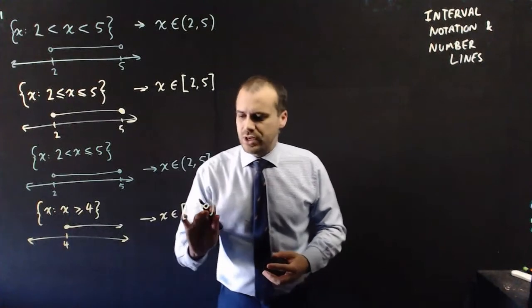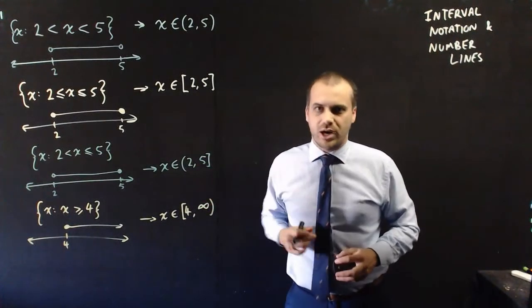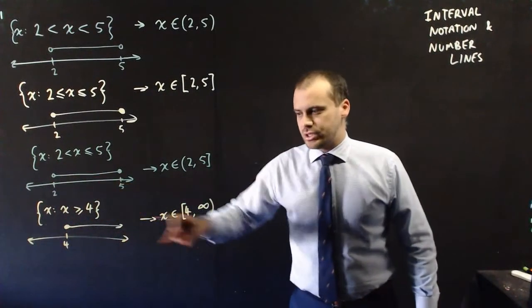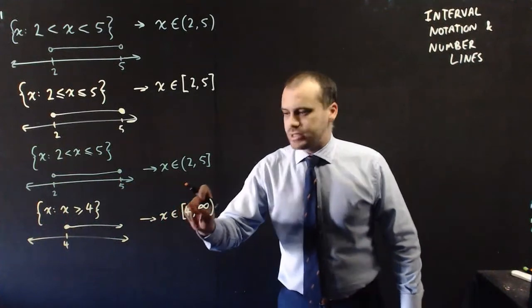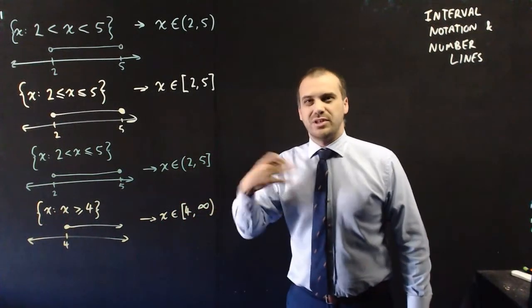So when we're talking about infinity, we always, no exceptions, use this curved bracket. This would also hold if the arrow was moving in the other direction and we had a negative infinity on the left-hand side, we'd use a curved bracket for negative infinity.